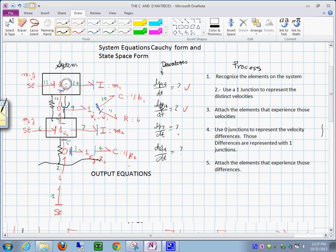Just to remind you, we laid out first the one junctions for the distinct velocities. Then we attach the elements that move at those velocities. And then we created the zero junction to represent the difference in velocities. So between this and this created that one. Between this and this created this one. And then finally we attach the elements that experience the difference in those velocities there.